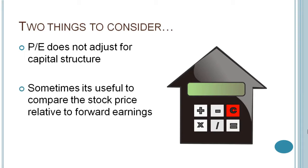The second thing that we need to consider is it's sometimes useful to compare the current stock price relative to forward earnings or future profits. This is called the forward P/E ratio because we're comparing the current stock price to future earnings. Typically, the stock price is compared relative to earnings 12 months in the future. So a stock price of a forward P/E ratio of 20x means that investors are paying $20 for every dollar of expected future profit.